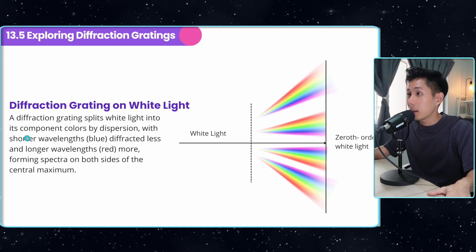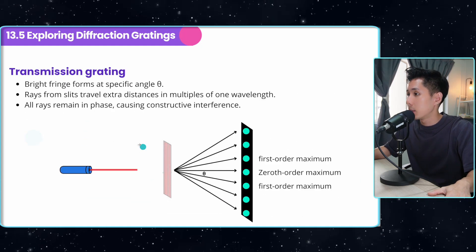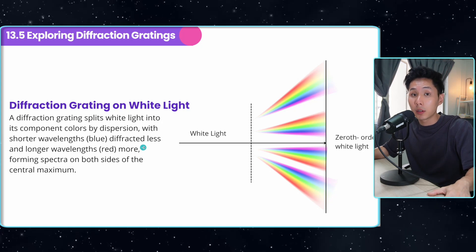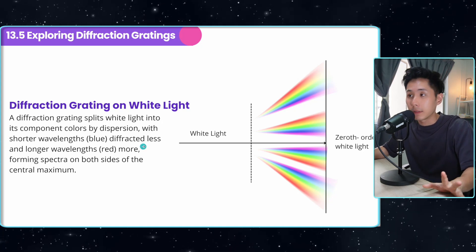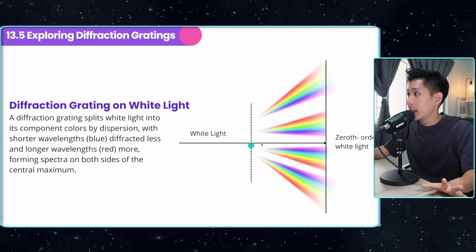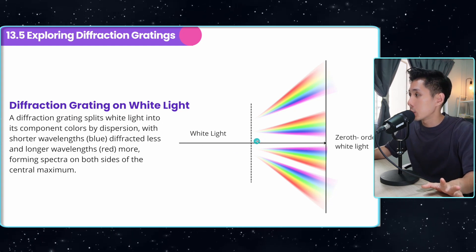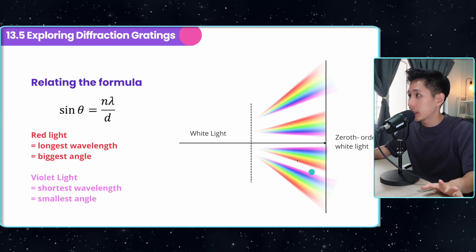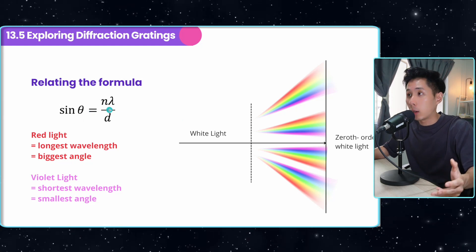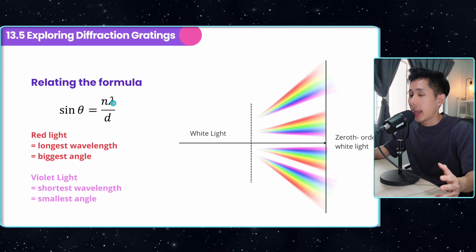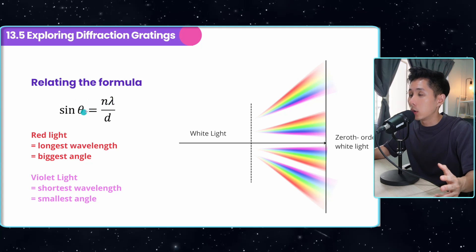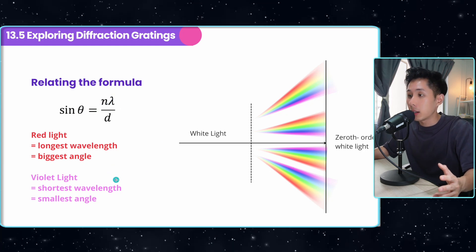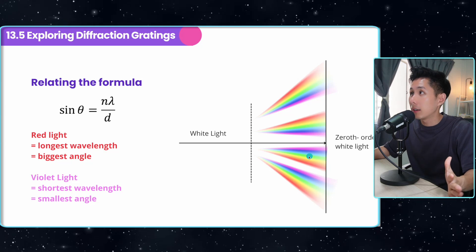Now, diffraction grating on white light. In the previous experiment, we used monochromatic light. But if you use white light — which is a combination of all colors — each color diffracts differently. When white light passes through the slits, you can see that red light diffracts the most because it has the longest wavelength, making the diffraction angle larger. Violet light diffracts the least because it has the shortest wavelength.